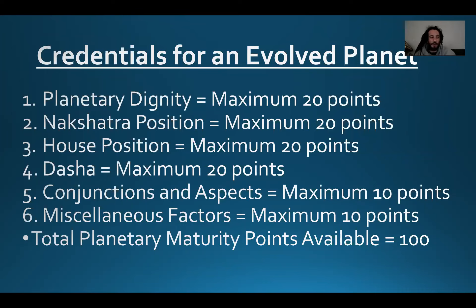The first factor in a planet's evolution is its planetary dignity relative to its sign position — is it exalted, debilitated, in an enemy sign, friend sign, neutral, great friend, great enemy, or Mula Tricona? When a planet is exalted, it gets the maximum 20 points. In its root position, about 15 points; natural sign 10 points; friend sign 8 to 7 points. As you get into neutral and enemy signs, it starts to lose points.